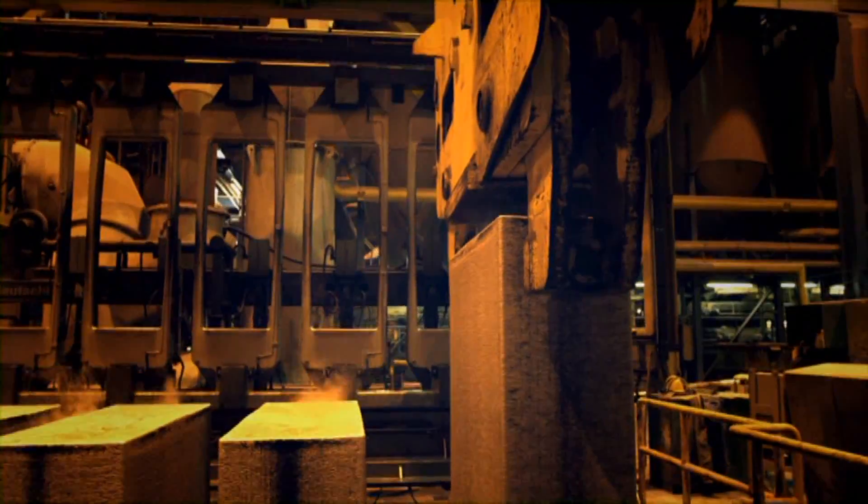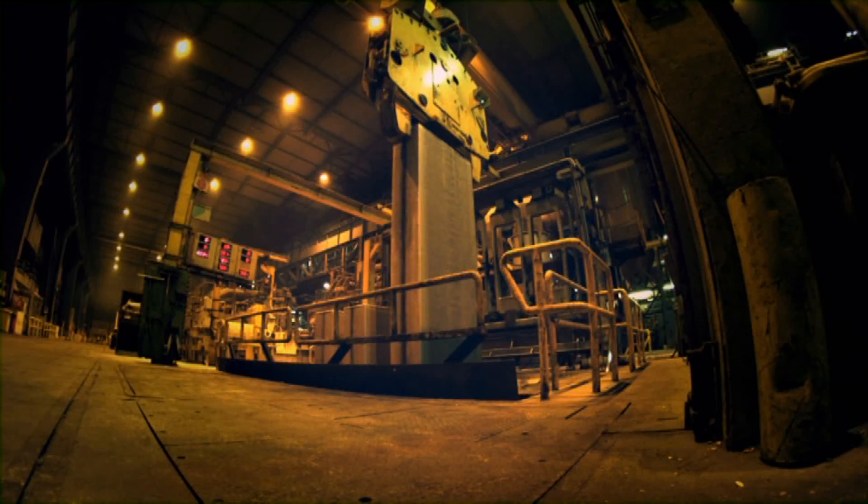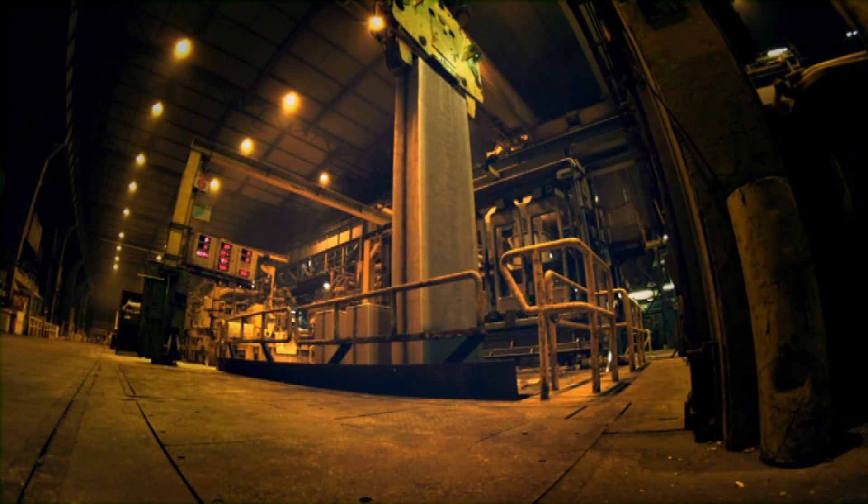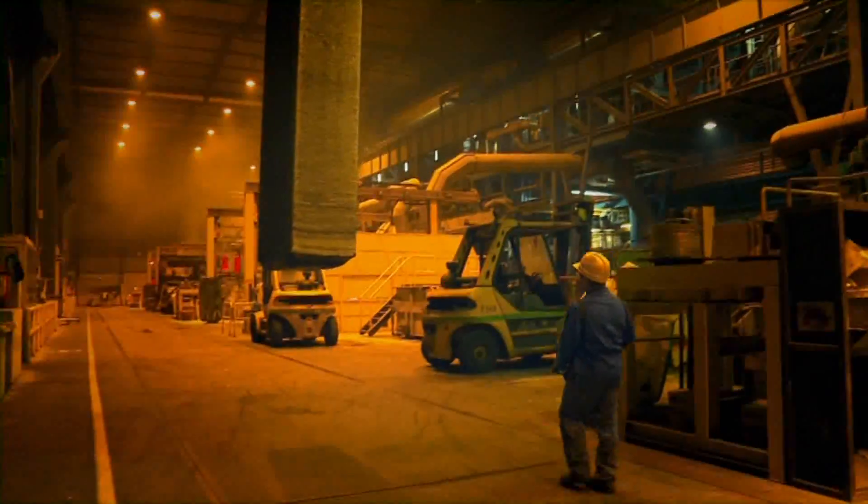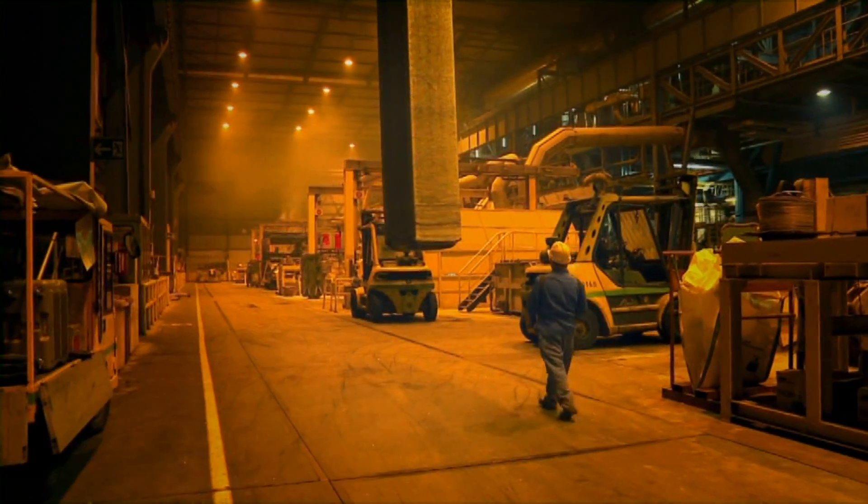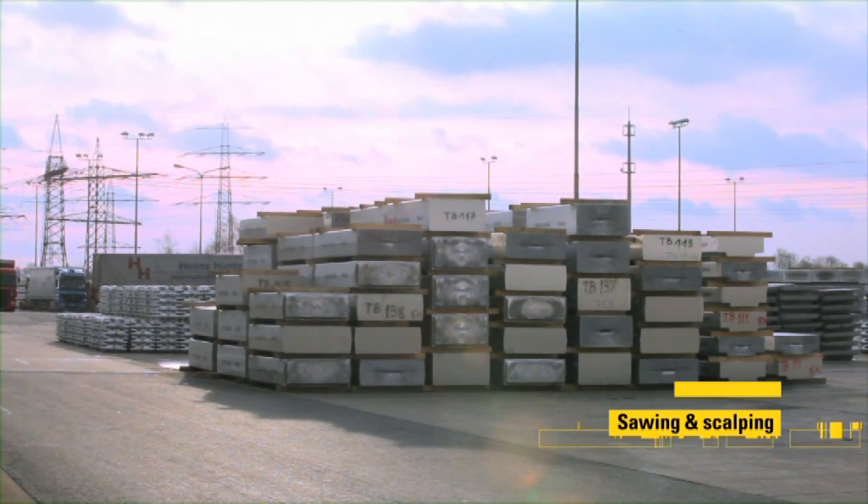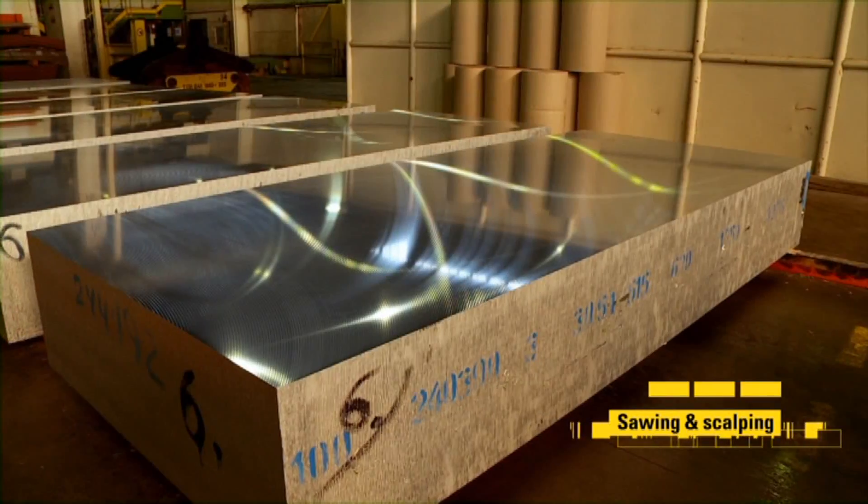These ingots will then be further shaped depending on the industry they are intended for. For use in the graphic arts or the printing industry these large ingots are then transported from their tapping station to be scalped and sawn into 10 ton blocks of aluminum.